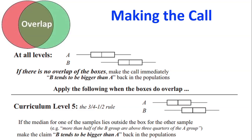So let's start with making the call. This is a piece of information straight from the curriculum document. If I've got two graphs of A and B, and if there is no overlap of the boxes at all, you can see here when I look at that, those two boxes have no overlap at all. There's space between the two boxes. So if you've got that case, absolutely you can make the call that group B tends to be bigger than group A back in our population. So that's what we can definitely do if there's space between them.